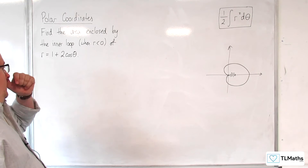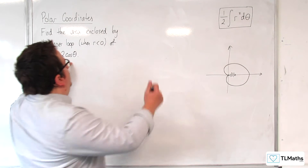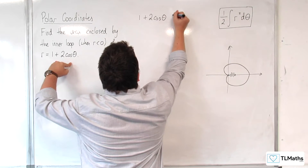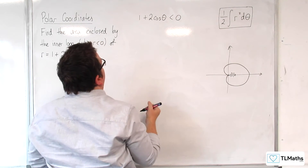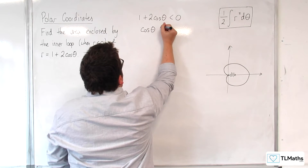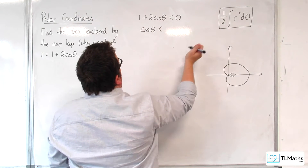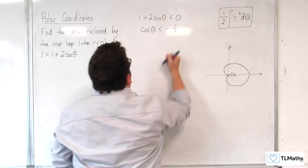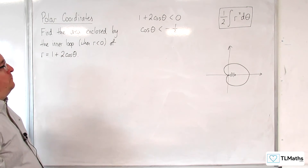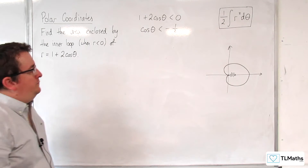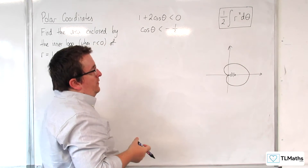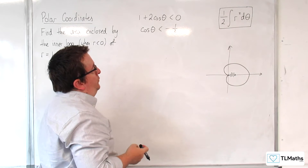So 1 plus 2 cosine theta is negative. Rearranging that — subtract the 1 from both sides, divide through by 2 — we're looking at when cosine theta is less than minus a half.